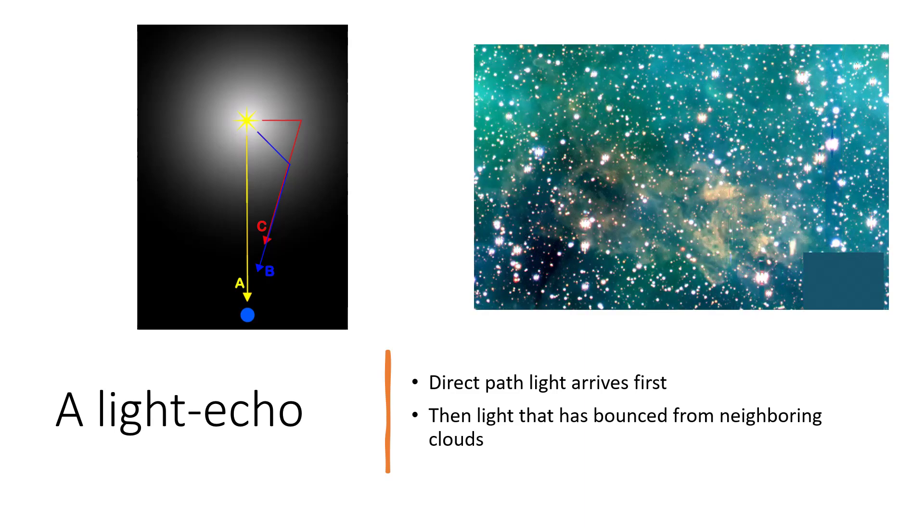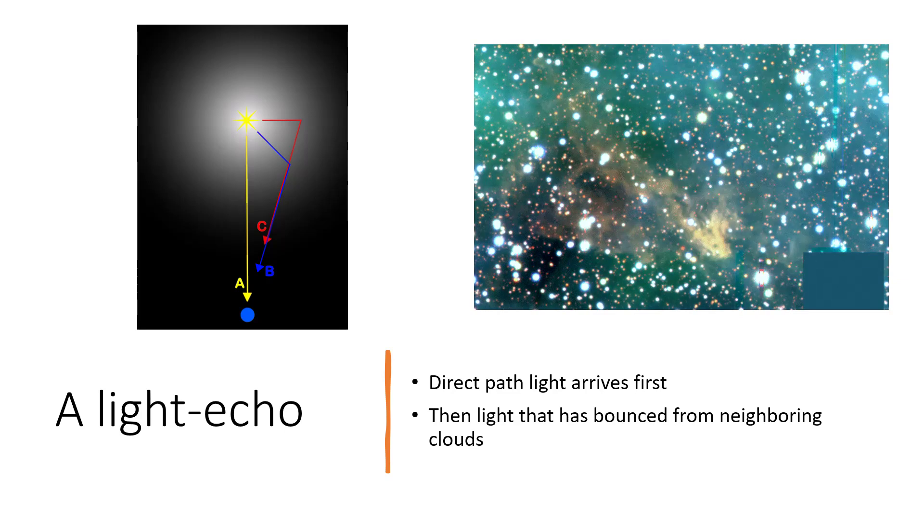The direct line of sight light came straight to us and arrived first. Then light that had taken a different route and reflected back to us off regions of the cloud, where the combined light travel time of the diagonal routes was longer, arrives afterwards. So whilst this looks like it's moving, it's the outward traveling camera flash. This is why you shouldn't use a flash to take pictures of things unless they're really close.